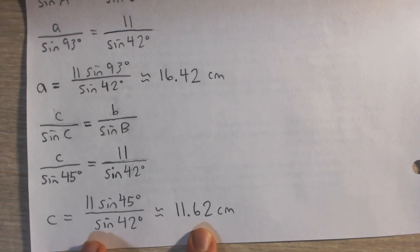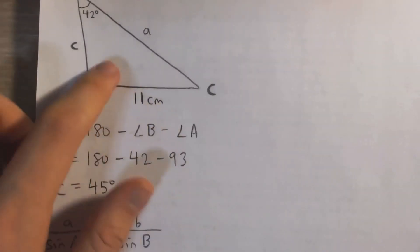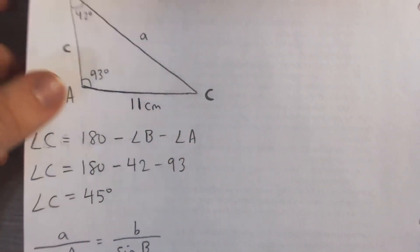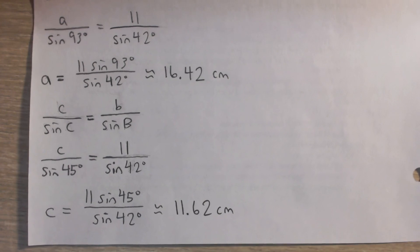And so there you go. That's the question - we solved for the remaining angle and we solved for the other two unknown sides. And there's your final answer.